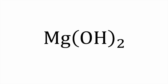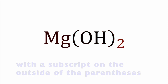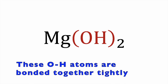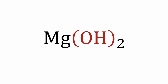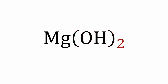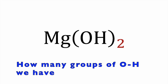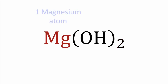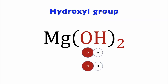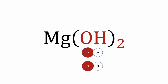Often you will see chemical formulas where we have two or more elements in parentheses with a subscript on the outside. The reason the OH is in parentheses is because these OH atoms are bonded together tightly as a group. The type of bond that bonds them is called a covalent bond, and you will be learning more about these later. The subscripts outside these groups in parentheses tell us how many groups of those atoms we have.